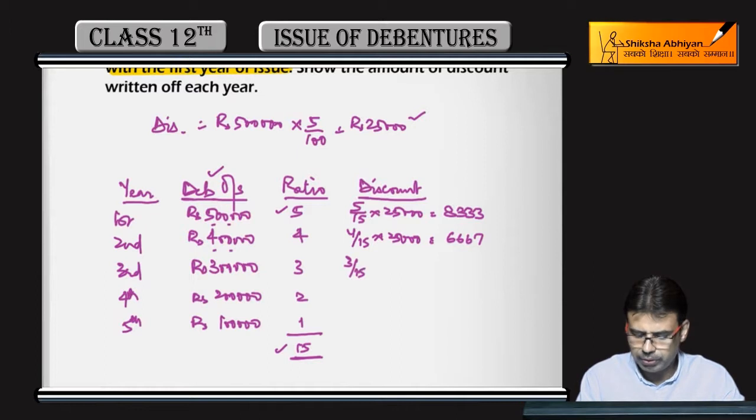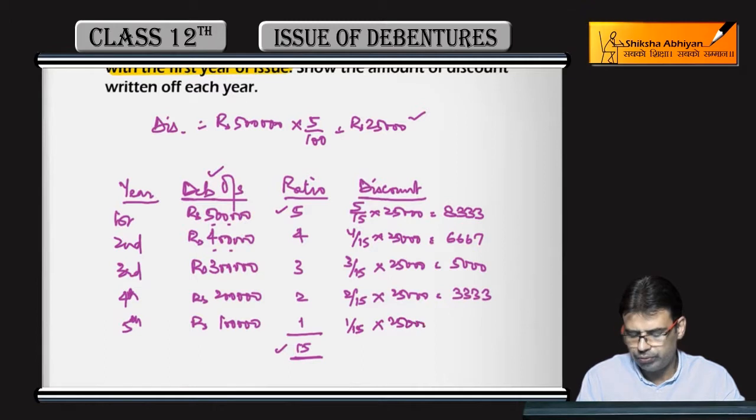Third year is 3 out of 15 of 25,000, which gives Rs. 5,000. Fourth year, 2 out of 15 of 25,000 gives Rs. 3,333. And last year, 1 out of 15 of 25,000 equals Rs. 1,667.